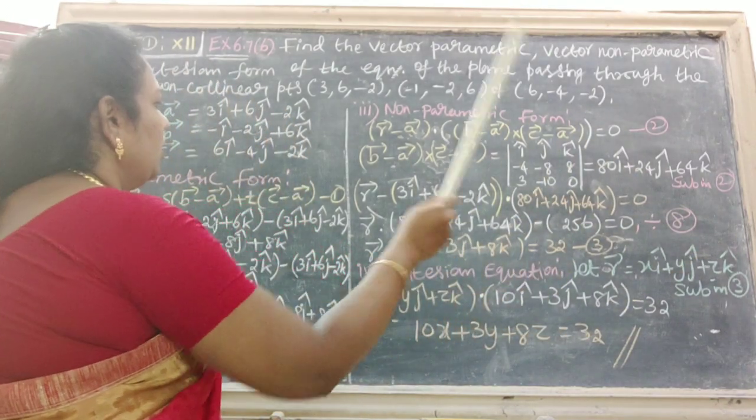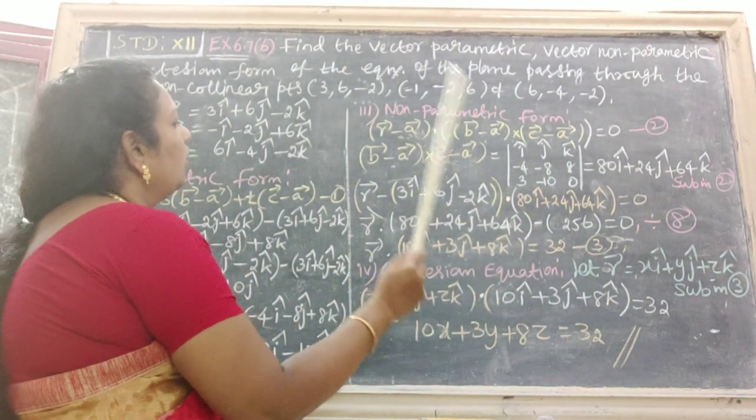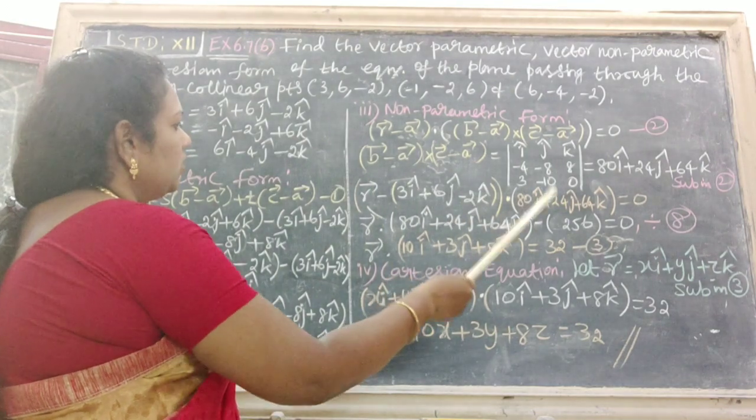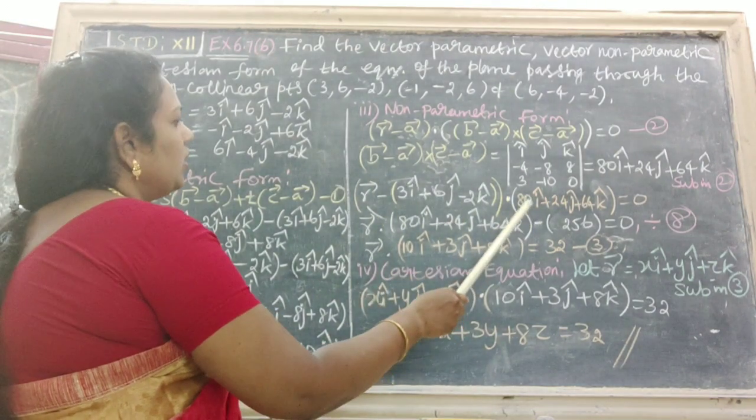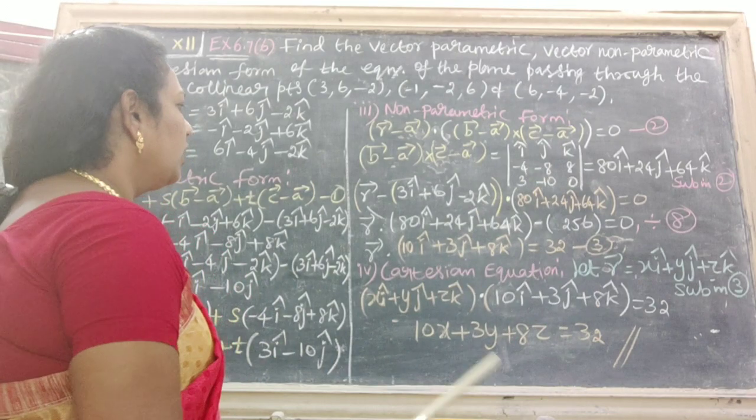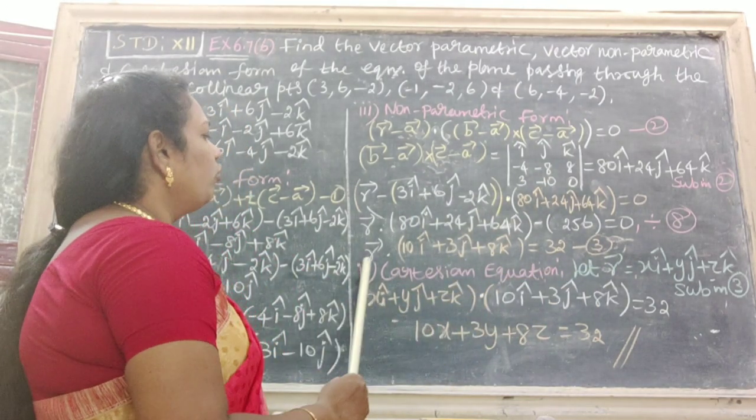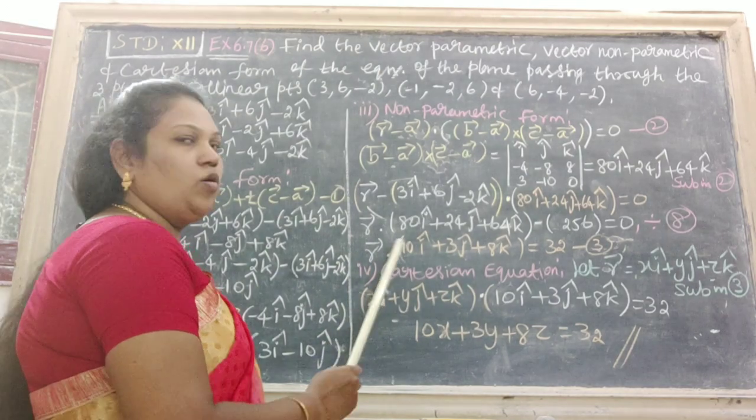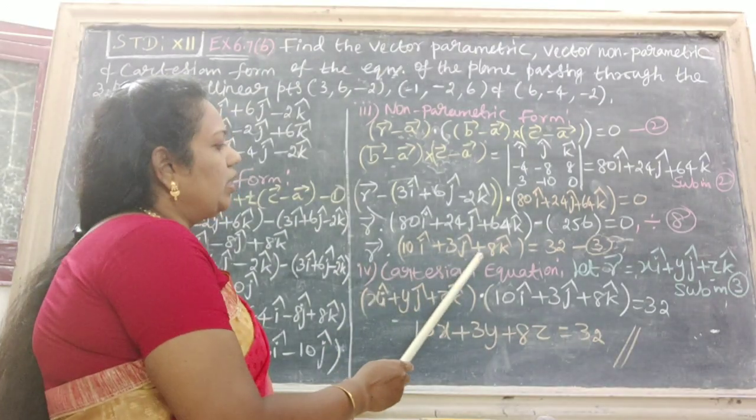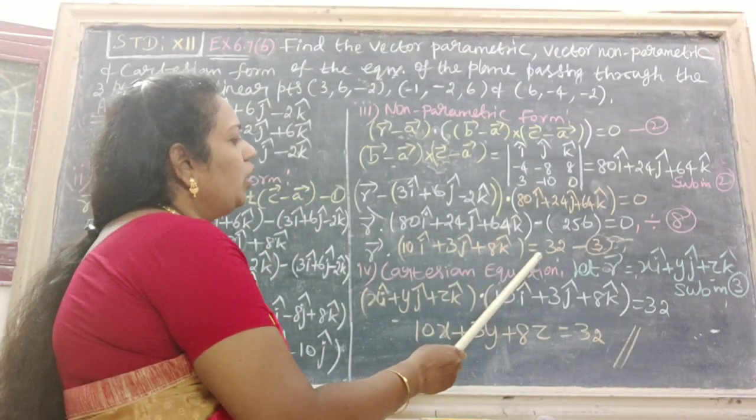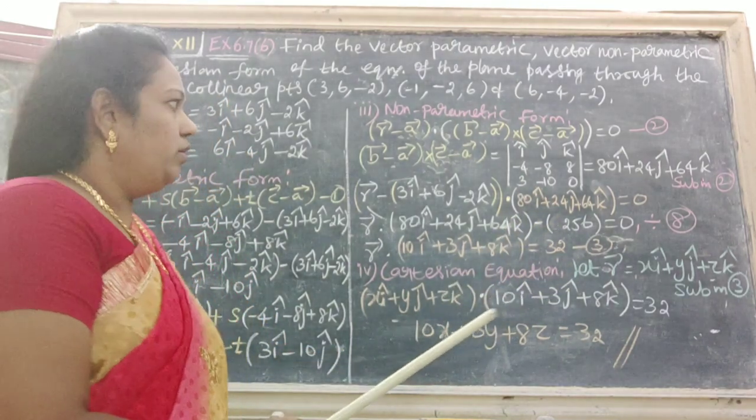Then substitute in second equation. We get this. Then multiply by dot product, we get this minus 256. Here we divide it by 8. Therefore, we get the answer R vector dot 10 I cap plus 3 J cap plus 8 K cap equal to 32. That is equation number 3.